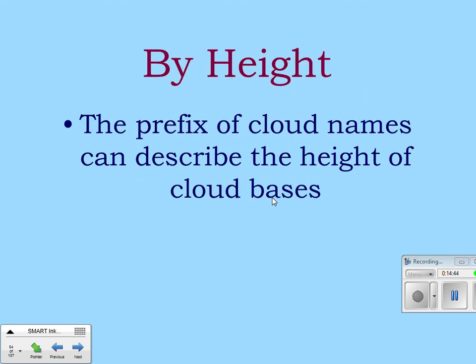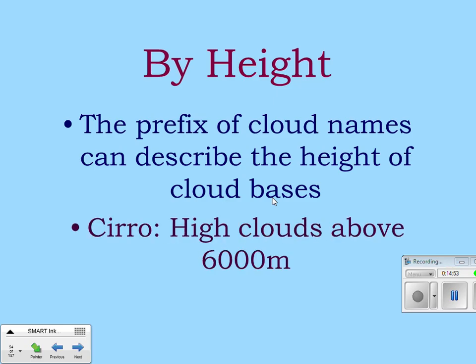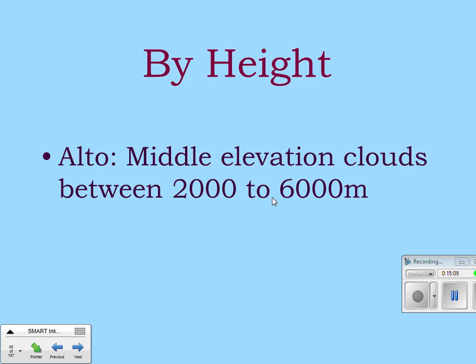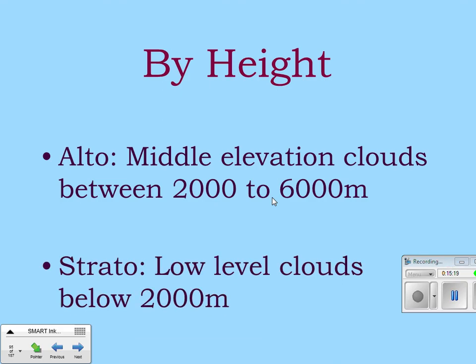The prefix of cloud names describes the height of the cloud base. 'Cirro' means high clouds above 6,000 meters. 'Alto' — like the middle singing range — refers to middle elevation clouds between 2,000 and 6,000 meters. 'Strato,' just like fog, means a low cloud close to the ground, below 2,000 meters.